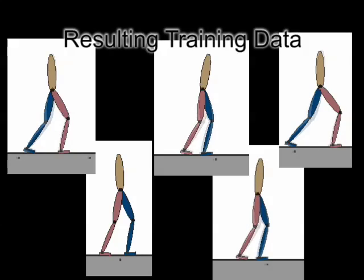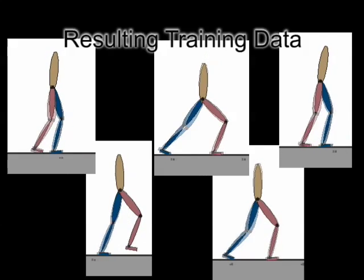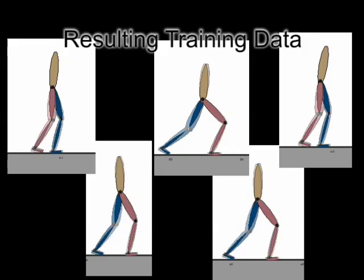For each step we record the starting state of the character, the action that is applied, the resulting state and the length of the step that is taken.